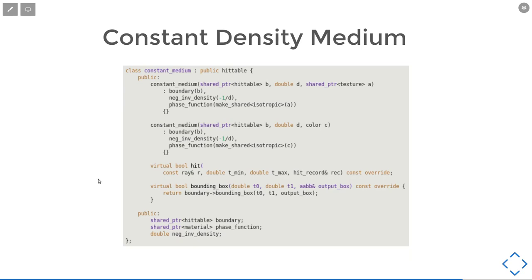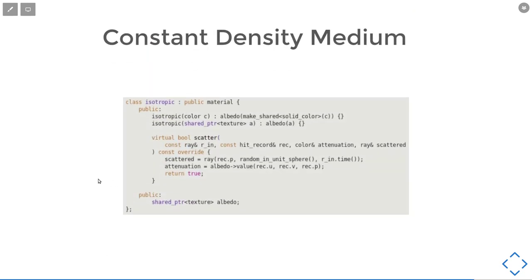The simplest kind of material is constant density. In this case, the probability of scattering is just some constant times the distance. We will calculate this by a constant medium shape that takes an underlying shape as its boundary, also a density and texture is used for scattering. Since we have constant media, we will just have isotropic scattering, which means it will scatter evenly in all directions.